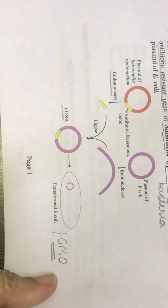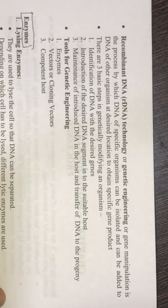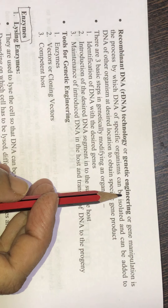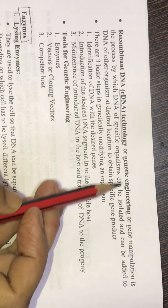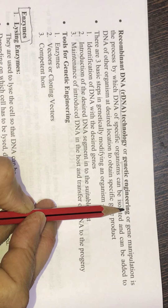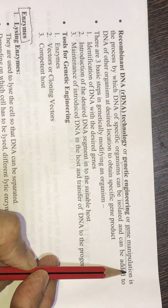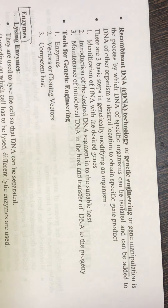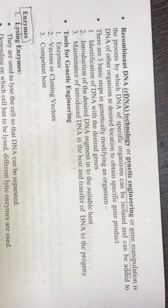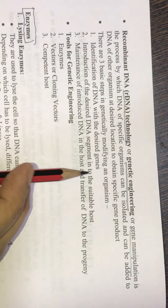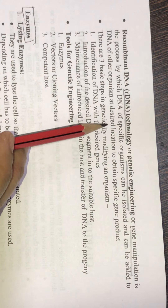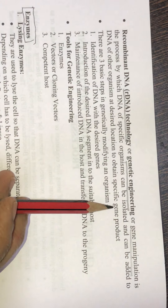Recombinant DNA technology is also called R-DNA technology, genetic engineering, or gene manipulation. It is a process by which DNA of specific organisms can be isolated and added to the DNA of other organisms at a desired location to obtain a specific gene product — just as shown in the previous example.